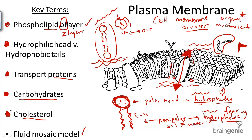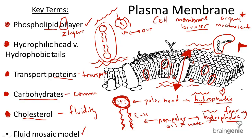Finally, cholesterol. Cholesterol are these structures embedded in the nonpolar regions of the phospholipid bilayer, and they help with the extremes of fluidity. Carbohydrates help with communication, transport proteins help with transport, and cholesterol helps with the wave-like structure that these phospholipids form. They need to move fluidly when animal cells are moving, but they also don't want to become too fluid and fall apart in cold temperatures. So cholesterol helps make the membrane just the right amount of fluidity.